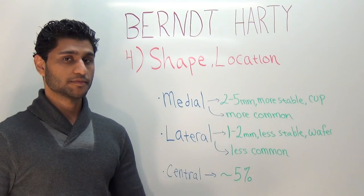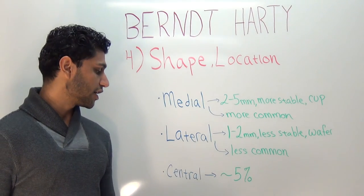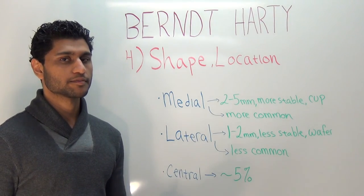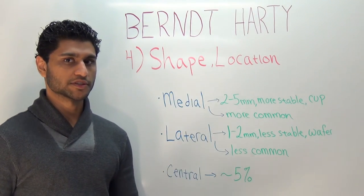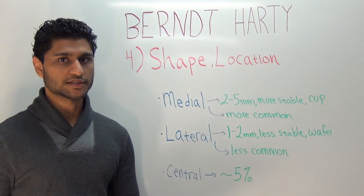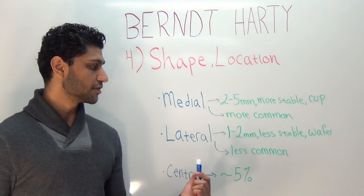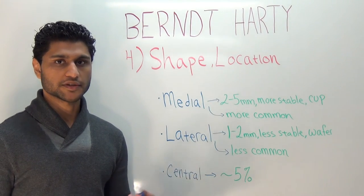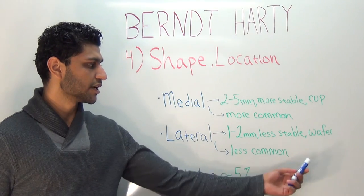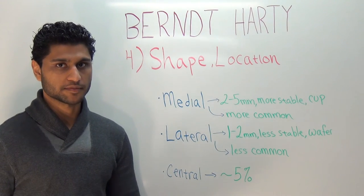In regards to location, keep in mind that these lesions can occur anywhere on the dome. They won't necessarily always be confined to the medial or lateral rim — they have been found in the center of the dome, accounting for about 5% of all lesions. In terms of shape, medial lesions tend to be larger in both surface area and depth, extending about 2–5mm. They are more stable with less tendency to displace, and they are more common than lateral lesions. Lateral lesions are smaller in surface area and depth, extending 1–2mm. They are less stable with an increased tendency to displace, and they are described as wafer-shaped. So on an exam: cup-shaped means medial lesion; wafer-shaped means lateral lesion.